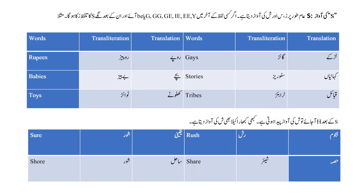نیکسٹ موو کرتے ہیں - اگلے لیٹر S ہے۔ S عام طور پر اردو کے اندر زے، سین اور شین کی آوازیں دیتا ہے۔ اگر کسی لفظ کے آخر میں G، GG، GE، IE، EE یا YE یا BE آئے تو اس کے بعد لگے S کا تلفظ زے کا ہوگا۔ مثلاً روپیز - S سے پہلے ڈبل EE آیا ہوا ہے اس لیے یہاں پر S کی ساؤنڈ زے کی ہے۔